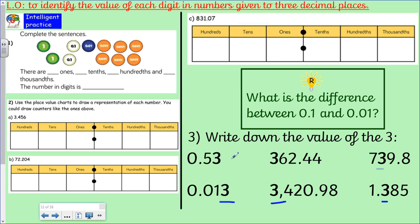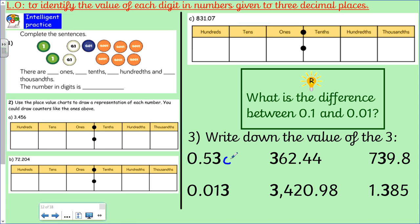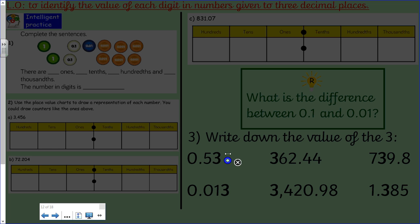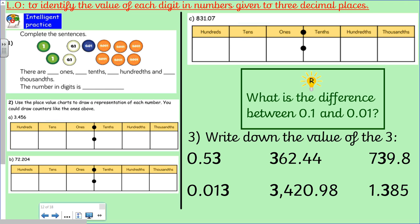I'm going to do this one for you. The value of the three here is 0.03. You could also write down 3/100. If you're feeling fancy, for each of them you could write it down in two ways: the decimal and the fraction. That would indeed be awesome, but I'm not going to show you any more on there. Have a go at that.